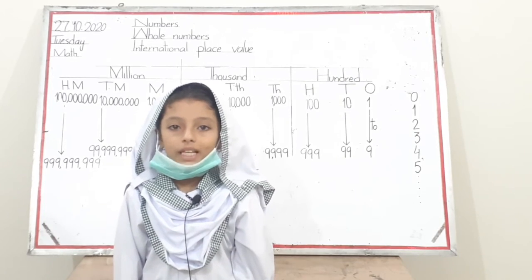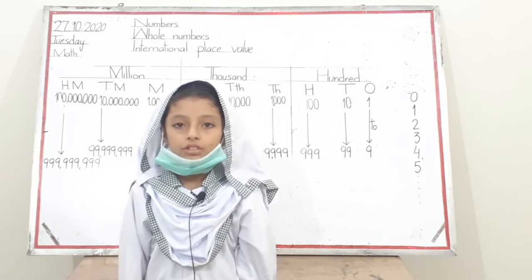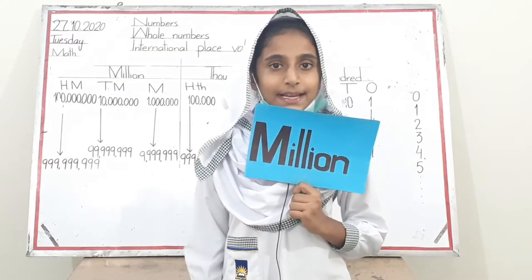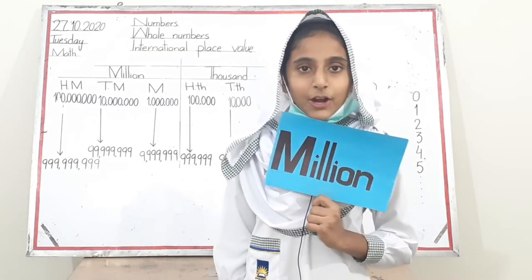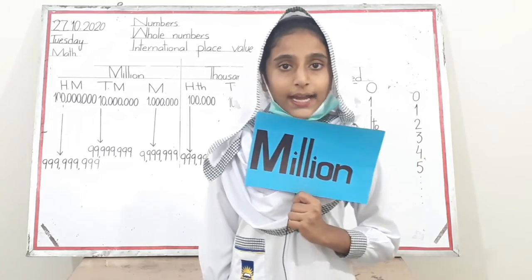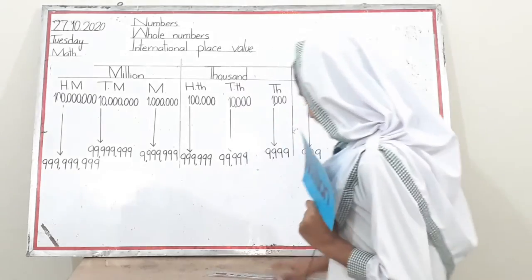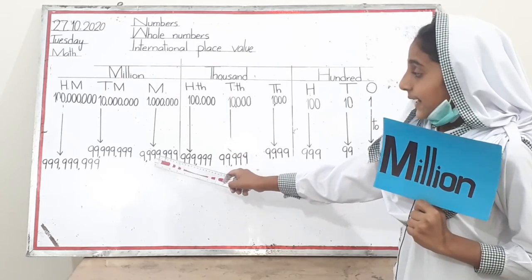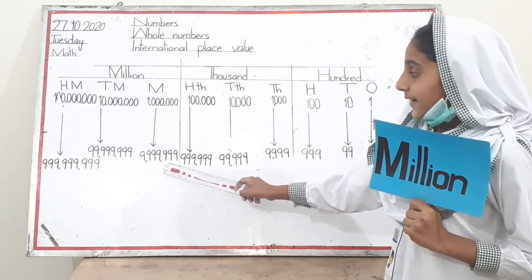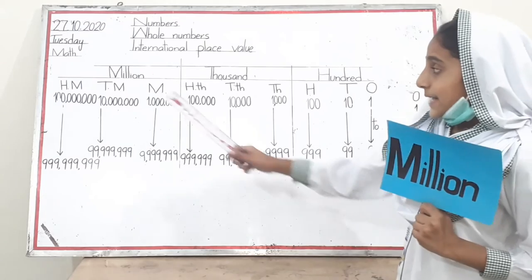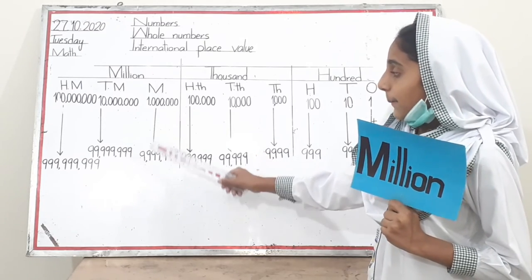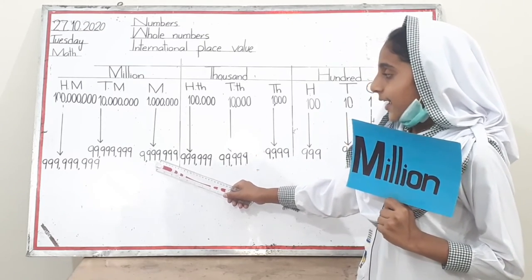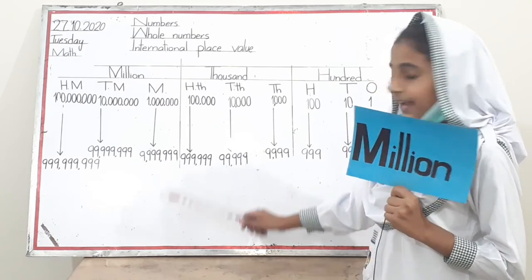Now the million family comes to introduce itself. Hi friends, I am million, a member of the million family. I show seven digits, for example one million to nine million nine hundred ninety-nine thousand nine hundred and ninety-nine. My smallest number is one million and my biggest number is nine million nine hundred ninety-nine thousand nine hundred and ninety-nine. Thanks.